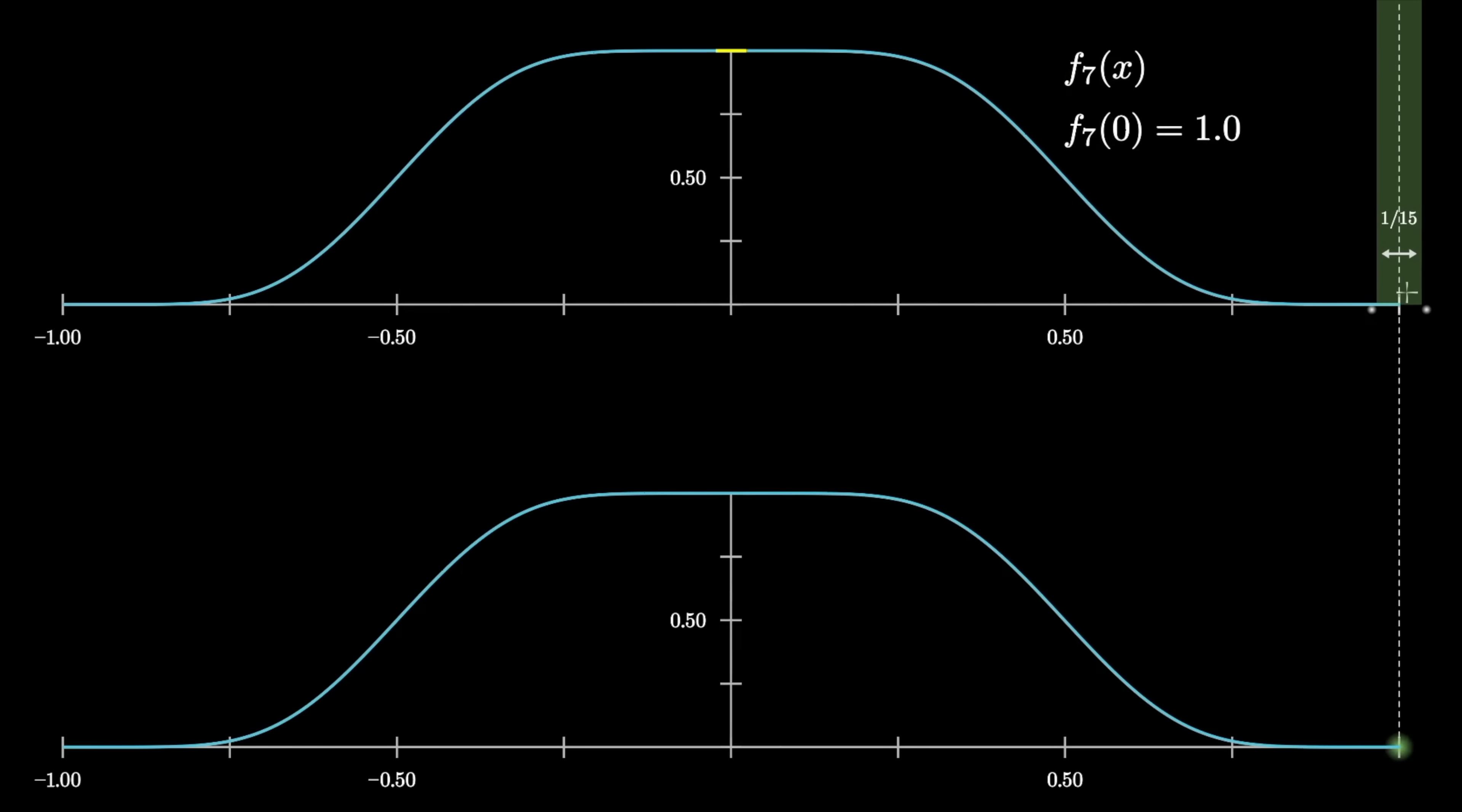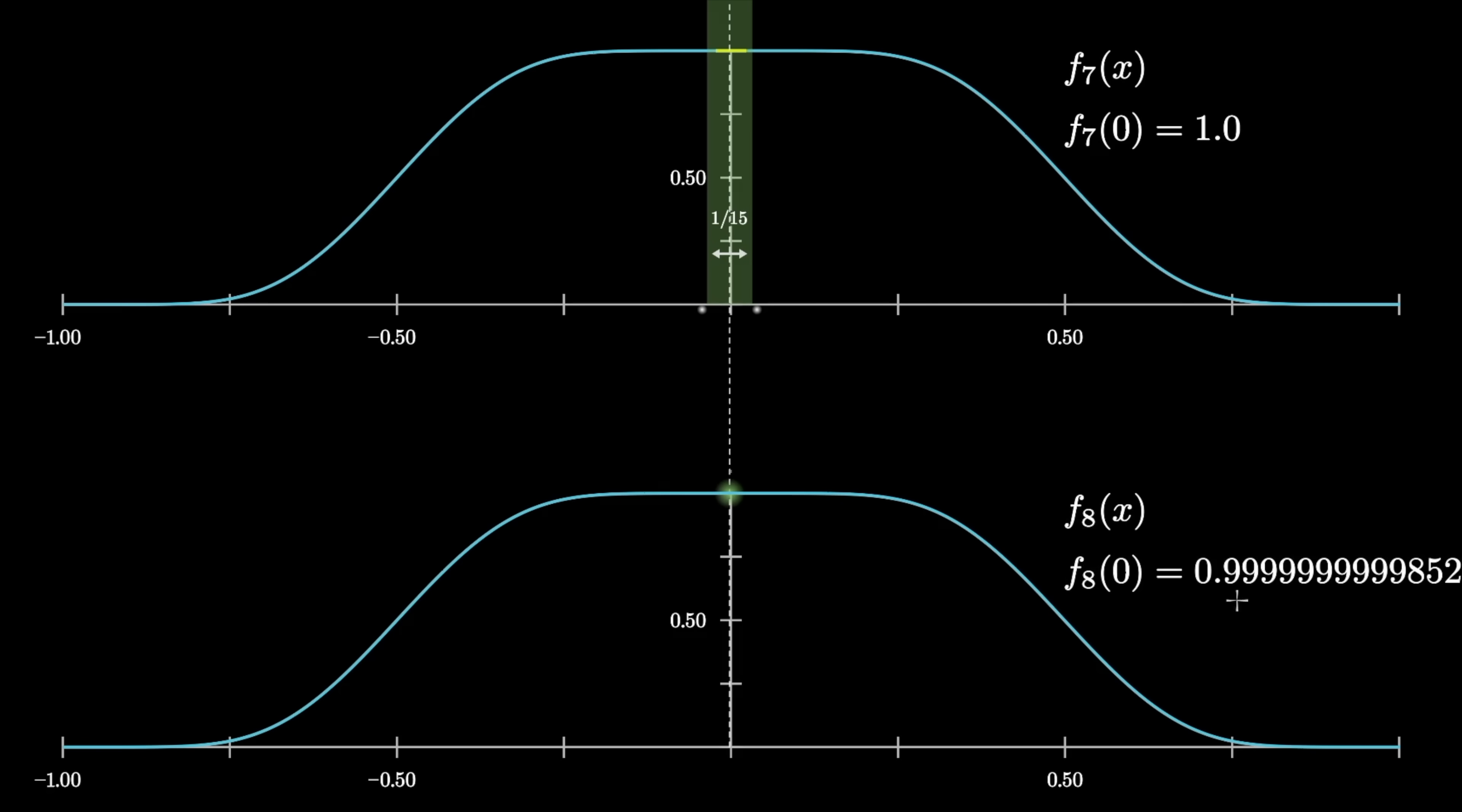At that point, the previous plateau is actually thinner than the window itself. So even at the input x equals 0, this moving average will have to be ever so slightly smaller than 1.